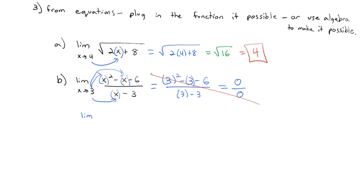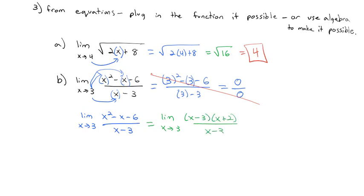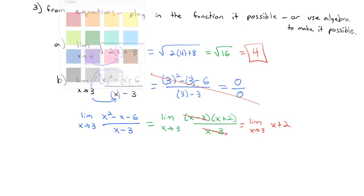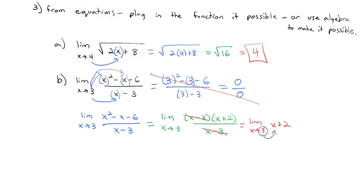For the limit as x approaches 3 of (x²-x-6)/(x-3), notice the numerator factors to (x-3)(x+2) over (x-3). The (x-3)s divide out, giving us the limit as x goes to 3 of just (x+2). Now we can plug 3 in and get 3+2 = 5 — the same answer we found using the table method.